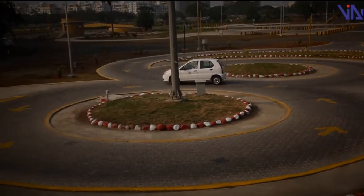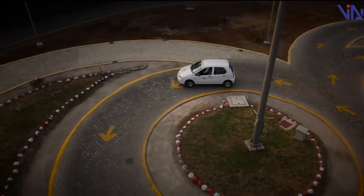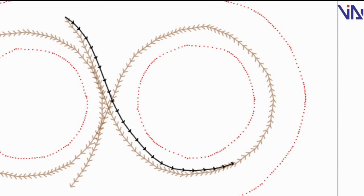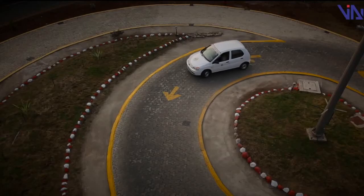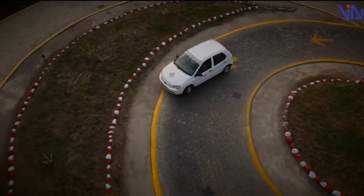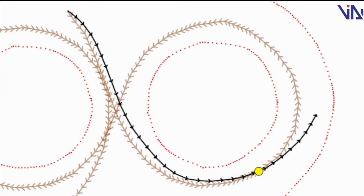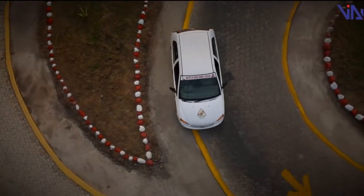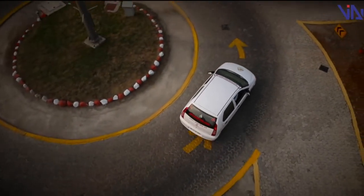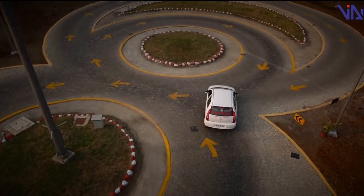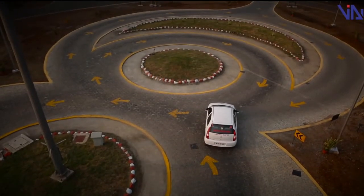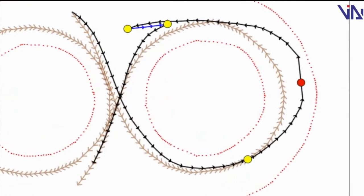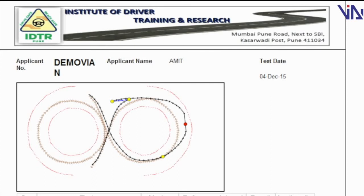Now let's see how the IDTS identifies the failures of candidates. Some of the parameters monitored are: stops, deviation from the expert path, curb hits, wrong direction, and reverses. As you can see, the IDTS has analyzed all the driving faults of this candidate and computed him as failed.